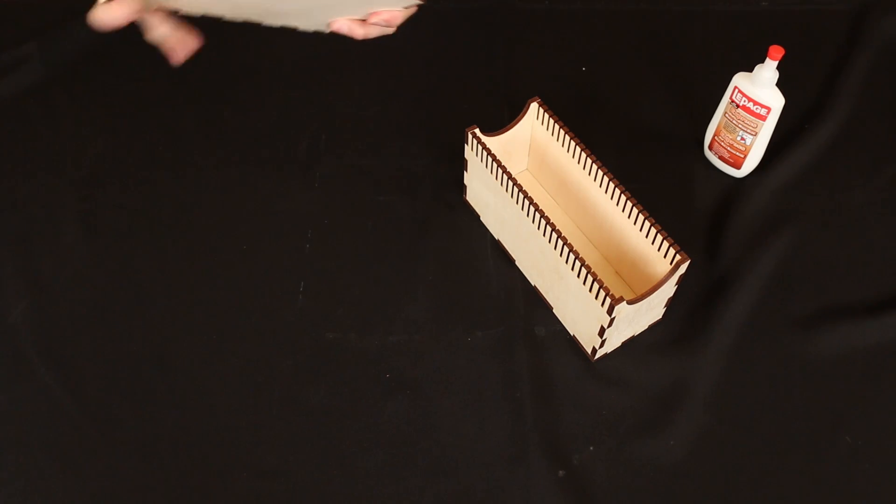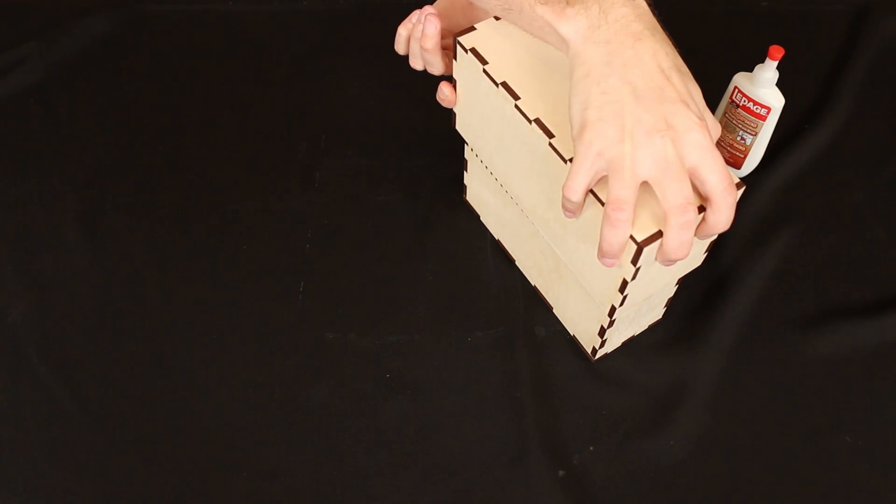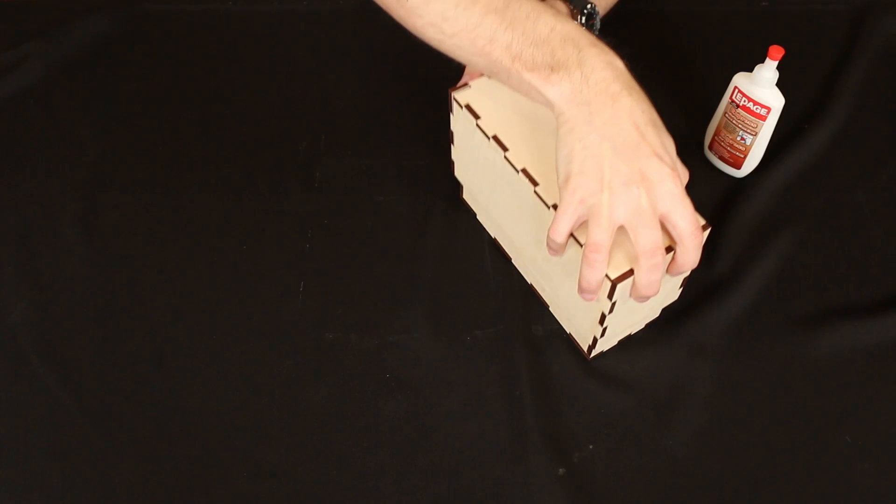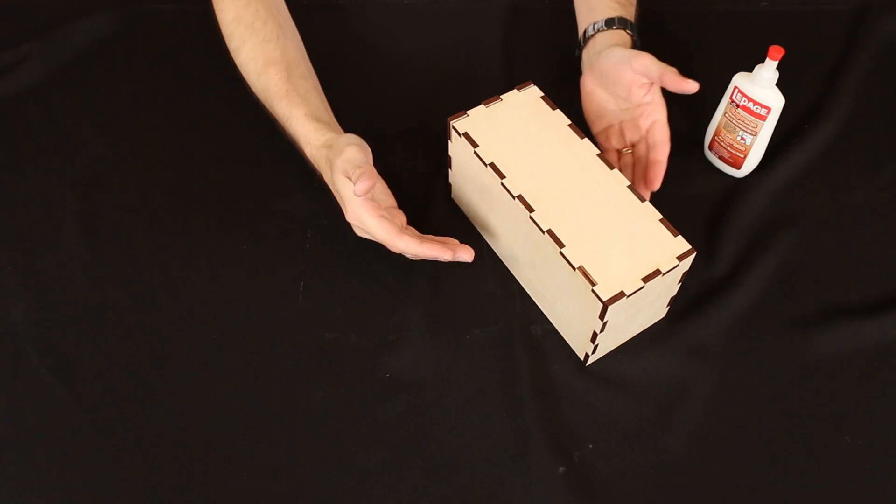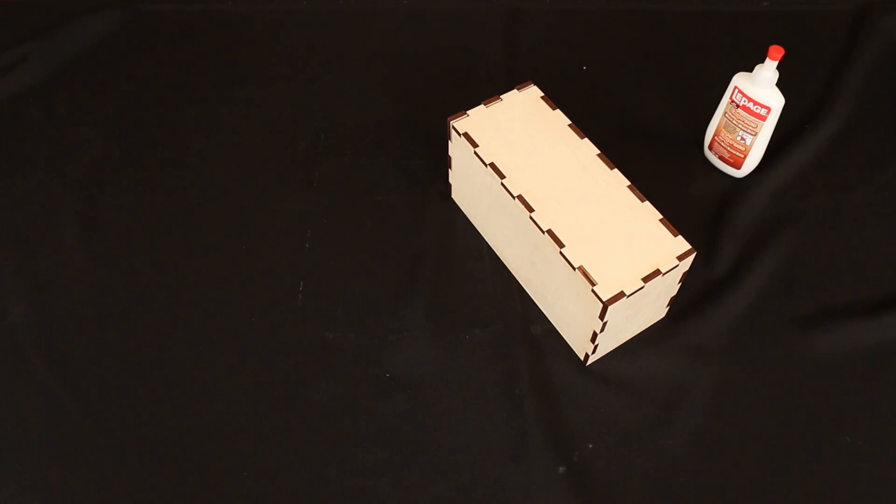Because this is the cover. It's going to fit over top of this card box. So if there's any roughness on the inside of this cover or on the outside of the box, it won't slide together like it's supposed to.